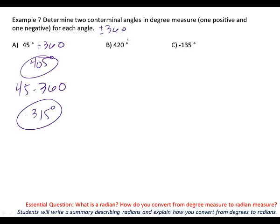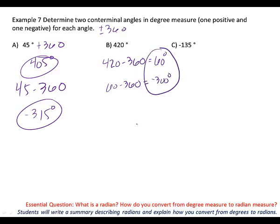This one is already a big positive number, and I can see that it's bigger than 360. So, I'm going to try subtracting because I want to do the least amount of work. If I subtract 360, what do we get? 60. So, I got a positive coterminal angle. If I want a negative coterminal angle, I'm going to take that 60 and subtract 360. And what do we end up with? Negative 300 would get us the negative coterminal angle.